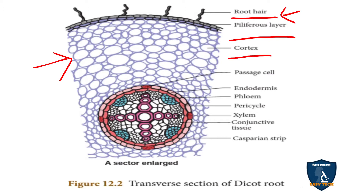Next we come to the cortex. In root, the cortex is made up of a single type of cells known as parenchymatous cells. The function of the cortex is storage of food materials and transport of water materials.